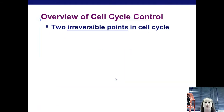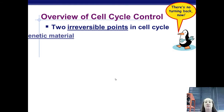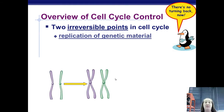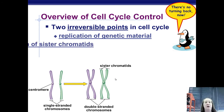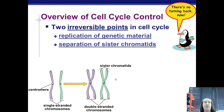So how is the cell cycle controlled? There are two irreversible points. The first is when all the DNA is replicated — once replicated, you have two copies, and the only way to resolve that is to divide. The second is the separation of sister chromatids. Once you've separated them, you can't shove them back together — they only go apart.